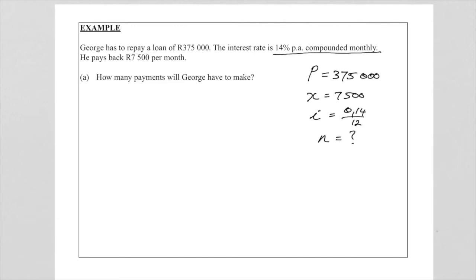So of course because it's a loan and we know the loan amount, we know the payment, we know the interest rate and we need to solve for n, we're going to use the present value annuity formula. Now P is equal to x times 1 minus (1 plus i) to the minus n, please remember that minus n for present value, over i. And now let's substitute.